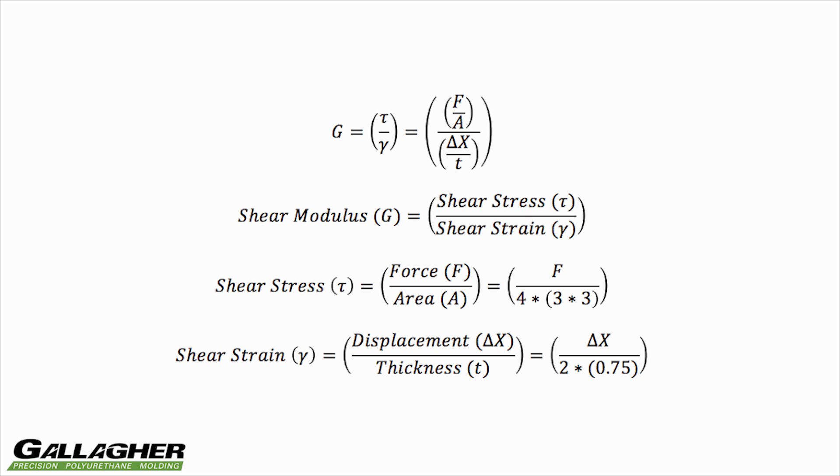The calculated area is equal to the area of one polyurethane block times four to account for the four blocks that make up the quad shear specimen.